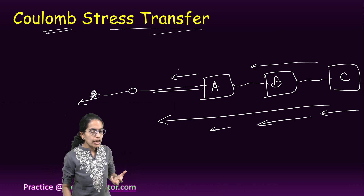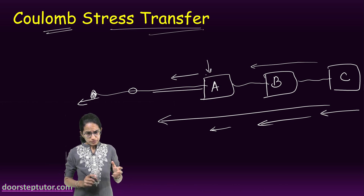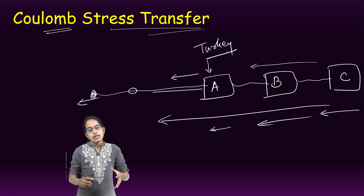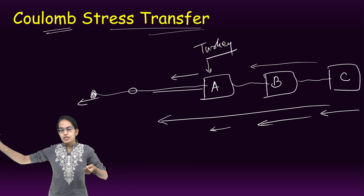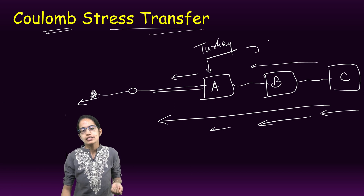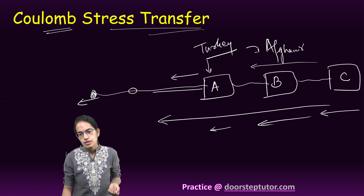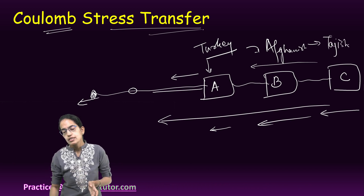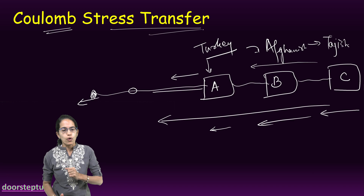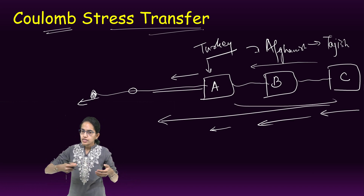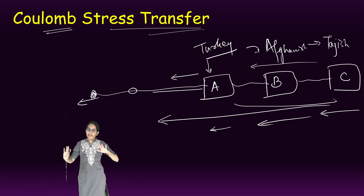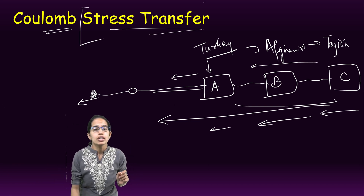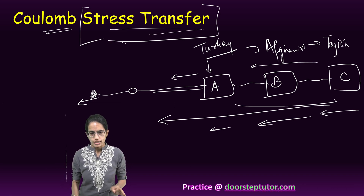What happens is, once we have a stress on block A — let's say this was Turkey — this stress would pass to the next close neighbor, which is Afghanistan. This stress would then pass to the next close neighbor, Tajikistan, then to India, China, and so on. But this intensity would reduce as the stress distance reduces. In very simple terms, this stress transfer itself is a very important concept that we need to understand.